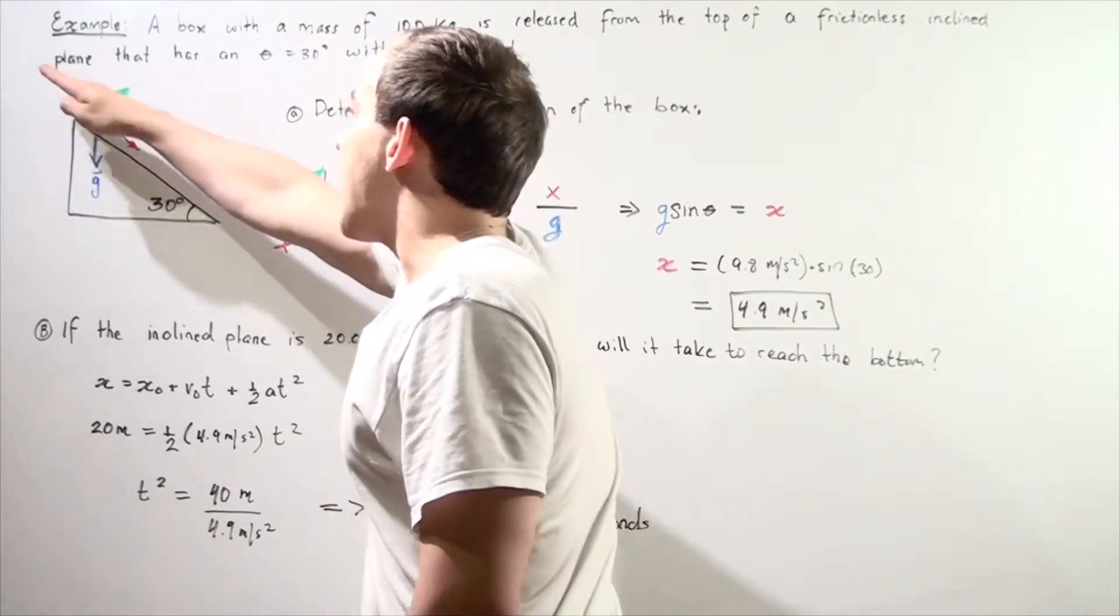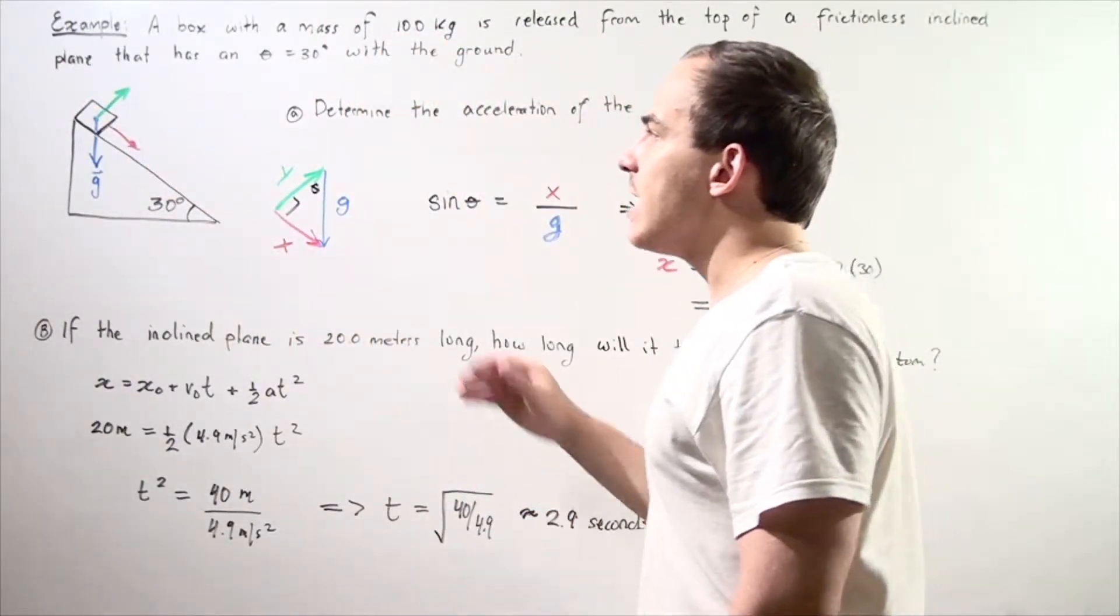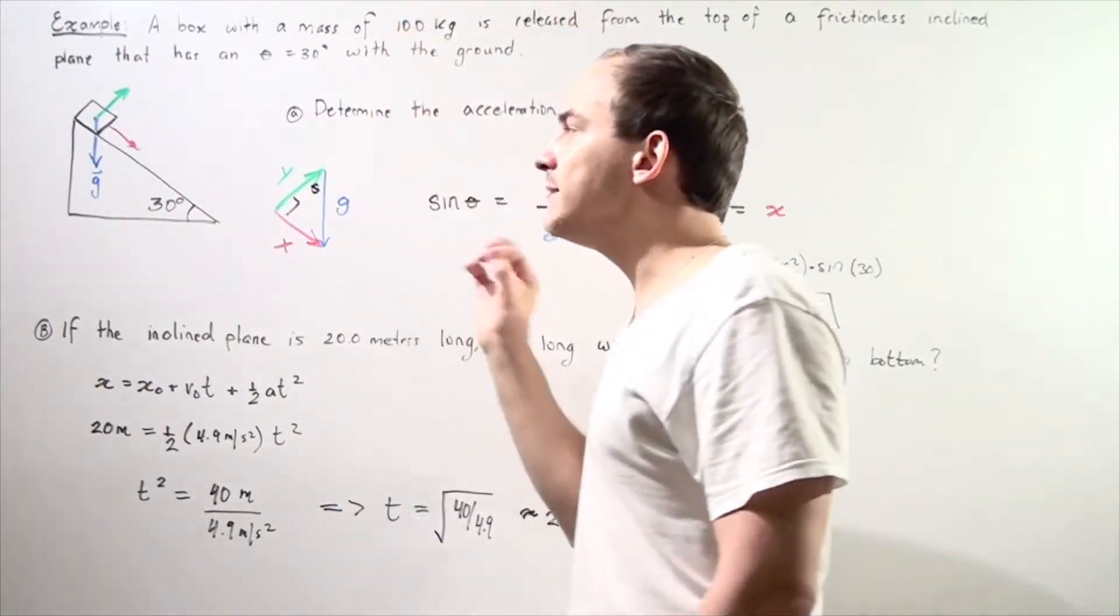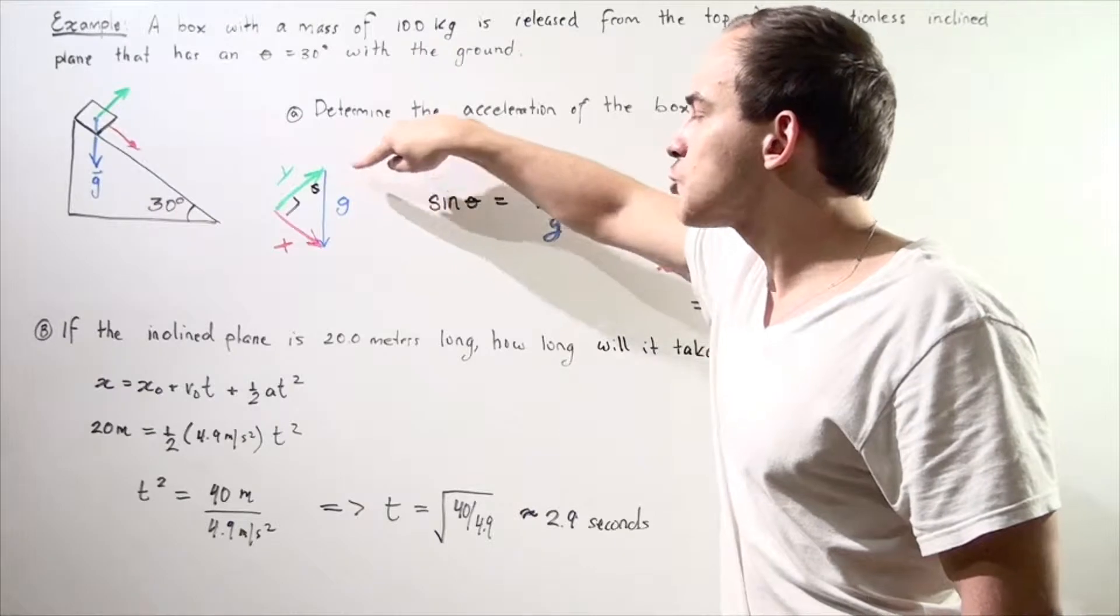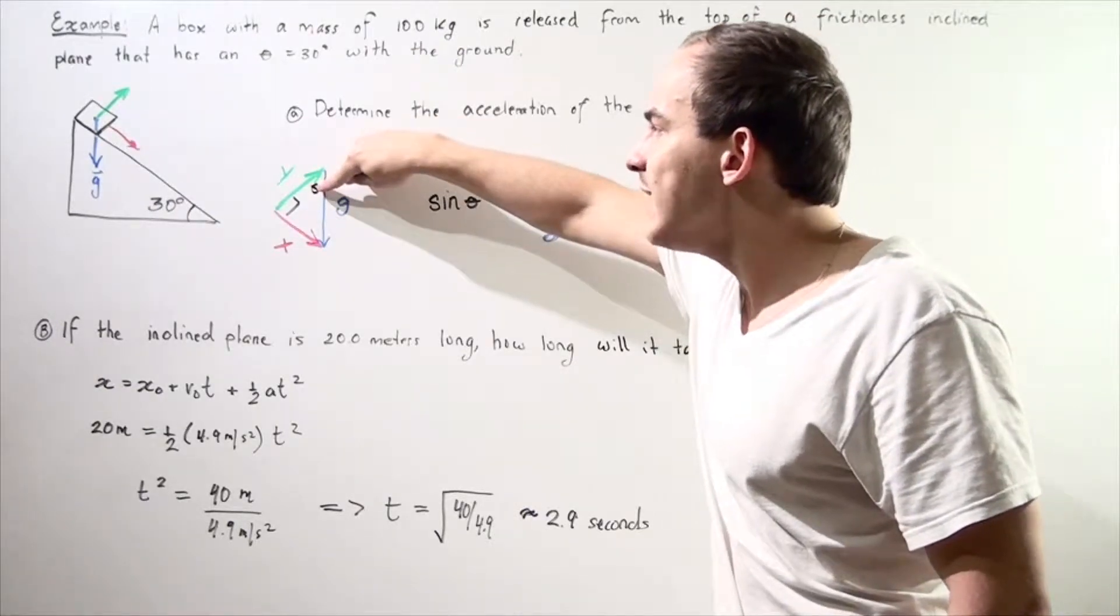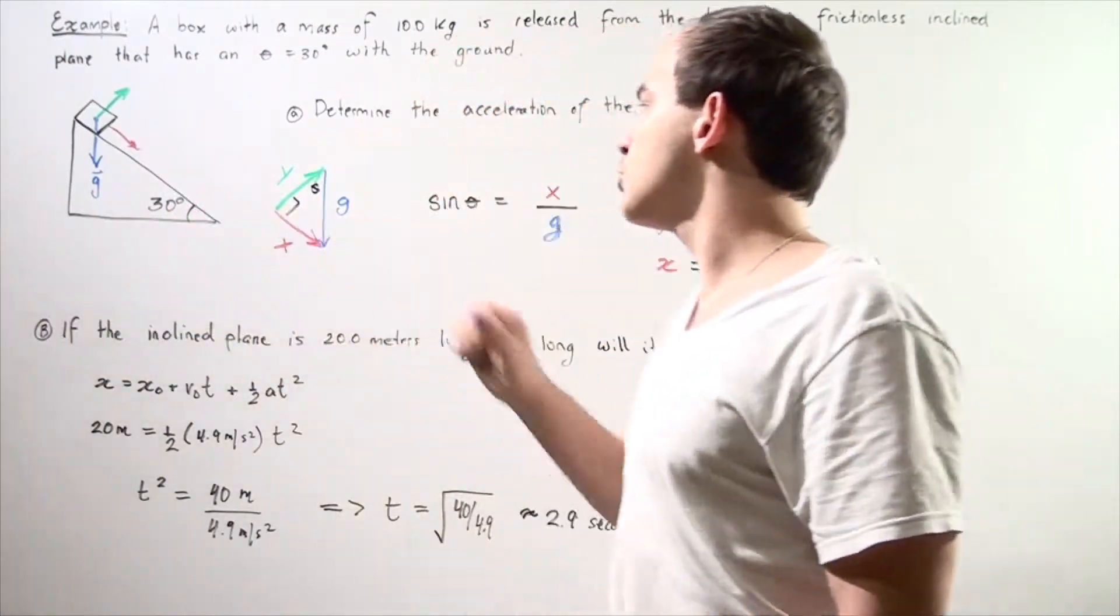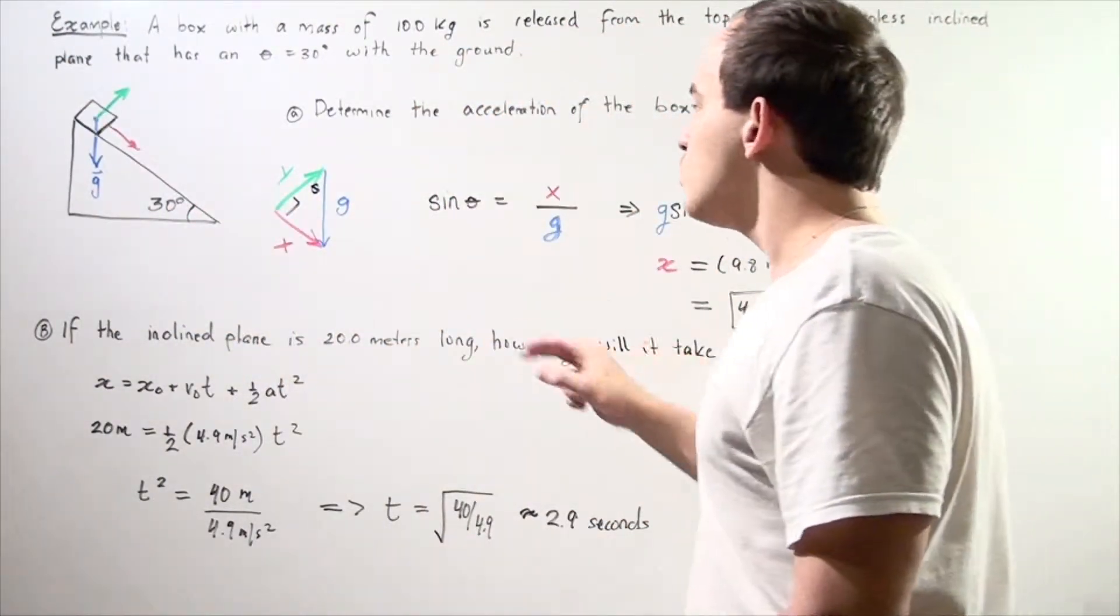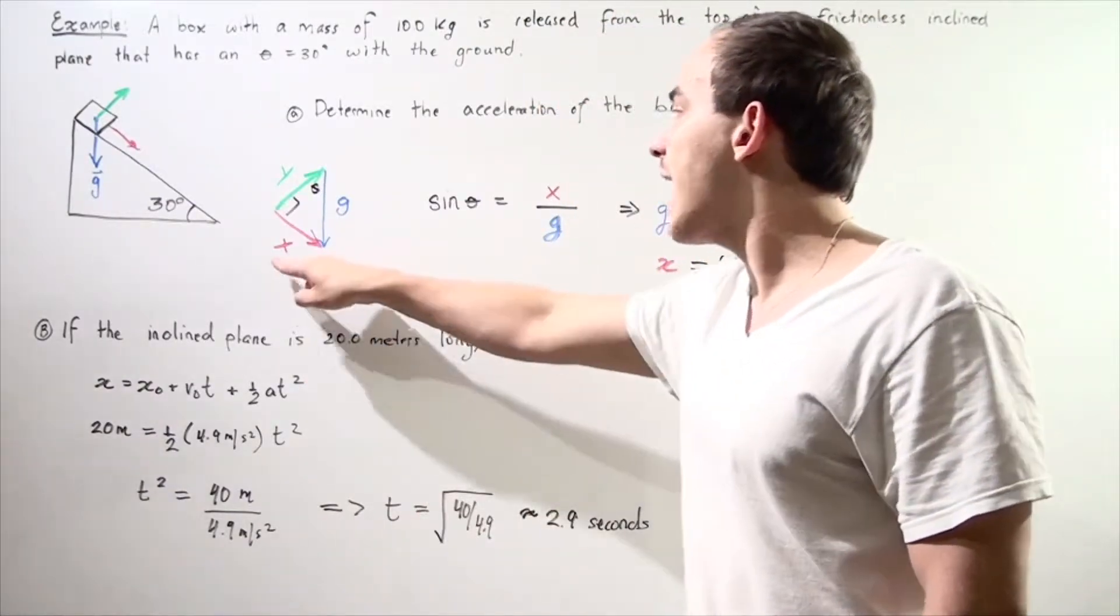It's our gravitational acceleration along our inclined surface. So we choose the x-axis to be parallel to the inclined surface, and the y-axis to be perpendicular to our inclined surface, and we build the following triangle, where this angle is the angle 30 that the inclined plane makes with respect to our ground.